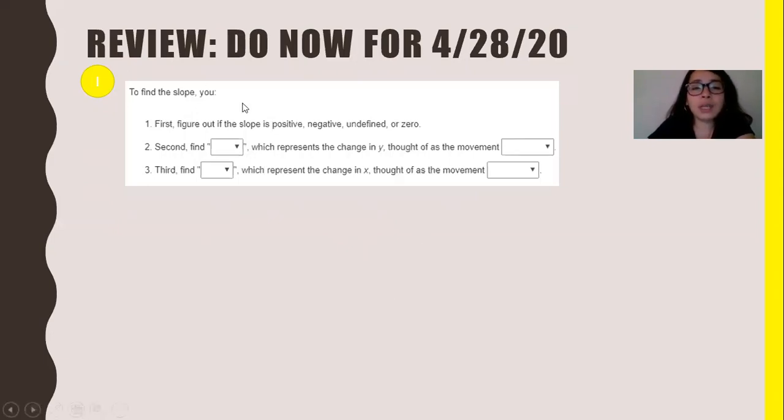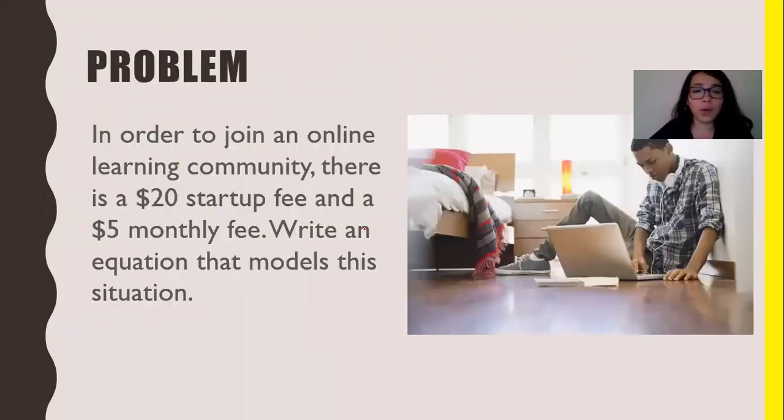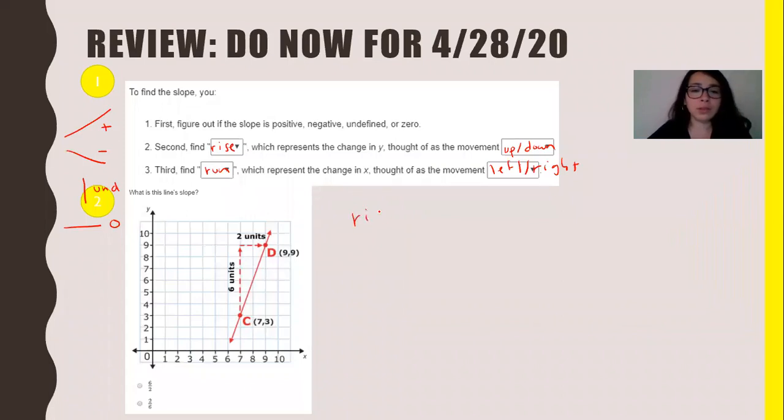So in order to figure out slope, first you have to see if it's positive, negative, undefined, or zero. So I'm not sure if you kind of remember. What is the line slope? So looking at the line slope, we're going to look at rise over run. But first we have to see if it's positive, negative, undefined, or zero. So if we look at this line, notice it's up. So it's like the snowboarder going up the hill. My slope is positive, so I don't need to put negative in front of it because it's positive.